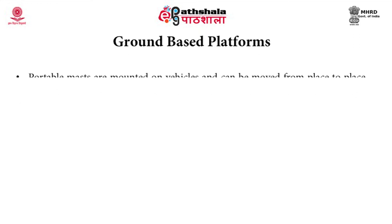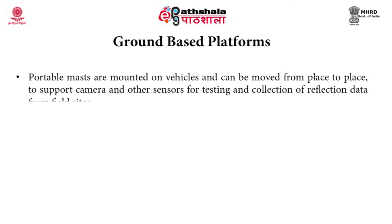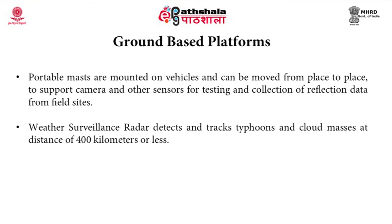Portable masts are mounted on vehicles and can be moved from place to place to support cameras and other sensors for testing and collection of reflection data from field sites. Weather surveillance radar detects and tracks typhoons and cloud masses at distances of 400 kilometers or less.